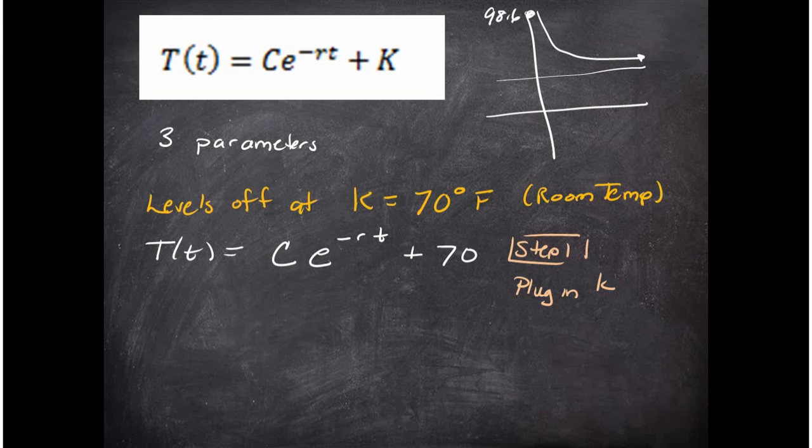So the first step is to plug in K, which I already have. Room temperature, and I'm assuming room temperature is 70 degrees. Is the room temperature in Richardson Hall 70 degrees? I doubt it. And the room temperature right here is actually 70 degrees because I've turned up the heat in my home.